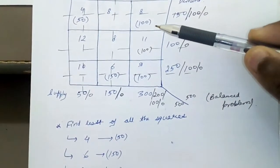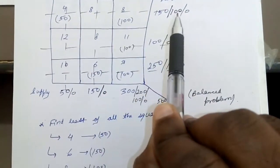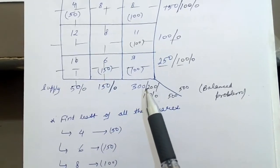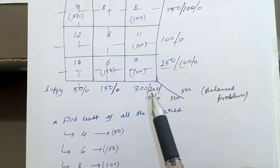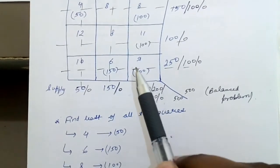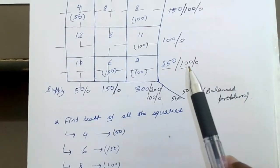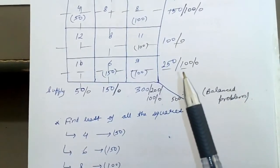Now two blocks remain: 11 and 9. So minimum is 9, so you first allocate here. Here 100 was left from the previous step. You put 100 here, you cross this row and here supply remains 100.